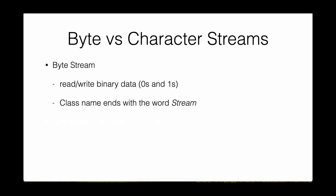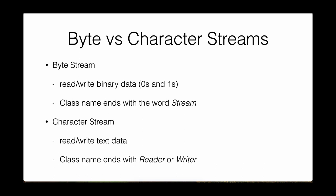A byte stream is a class that reads or writes binary data — zeros and ones. The class name ends with the word 'stream', which is very important. If a class name contains 'stream', that class is a byte stream. A character stream, on the other hand, reads and writes text data. You might ask: in computers everything is binary, so what does text data mean? These types of classes use 'reader' or 'writer' in their name.